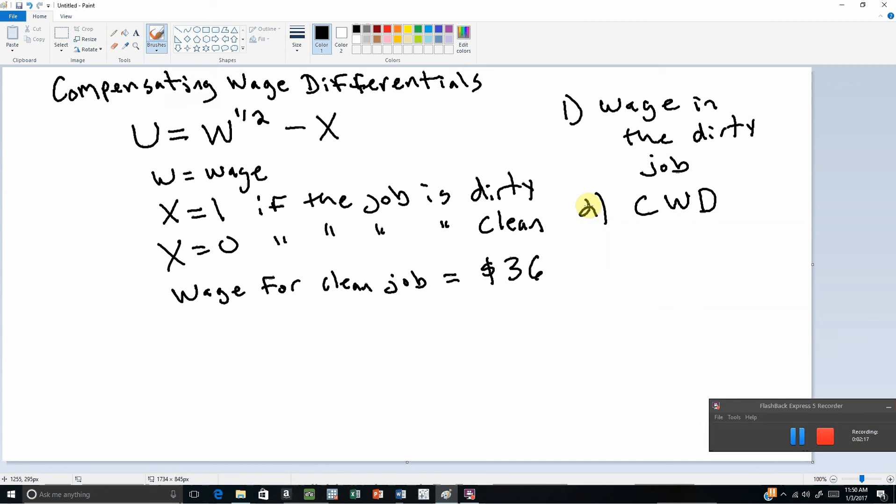Okay, so to begin, let's calculate the utility of someone working in a clean job. If someone's working in the clean job, their wage is $36, and given this functional form, we're going to have to take the square root of it. Since this person works in a clean job, X is zero, so it's just a matter of solving this, and we see that somebody working in a clean job will get a utility equal to six.